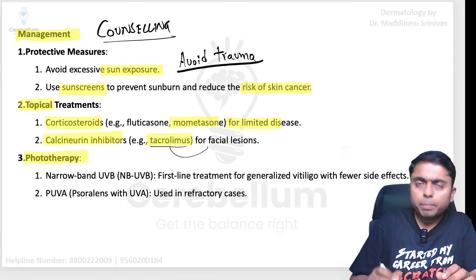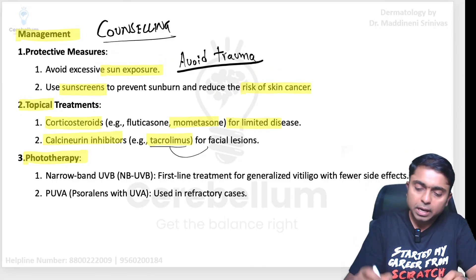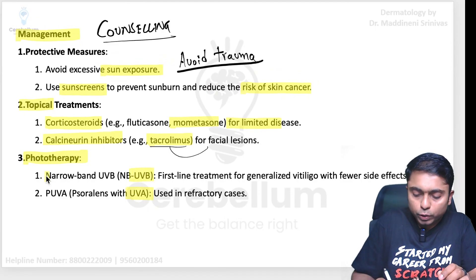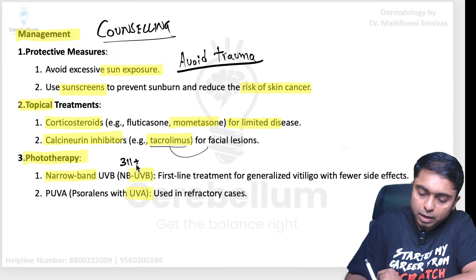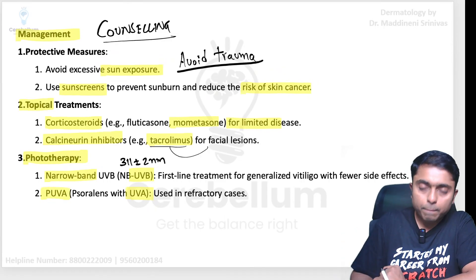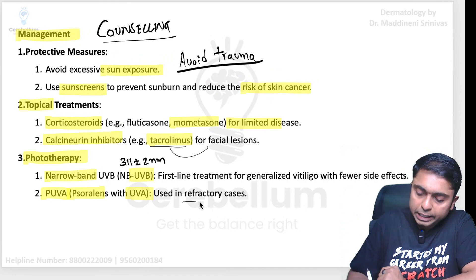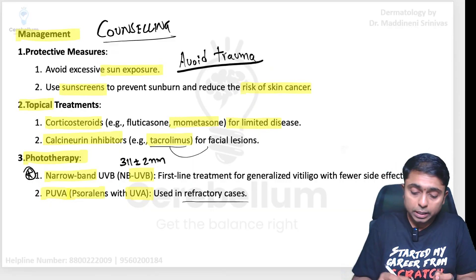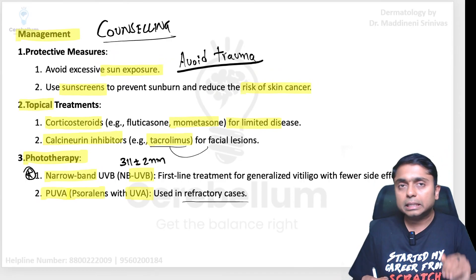Phototherapy involves treating dermatological conditions with ultraviolet light. We have two types: UVB — used as narrow-band UVB with a wavelength of 311 ± 2 nanometers — and UVA, which is combined with psoralen and called PUVA therapy (psoralen plus UVA), used in refractory cases. Narrow-band UVB is more preferred over PUVA therapy. I have also made a video on phototherapy, linked in the icards and description.